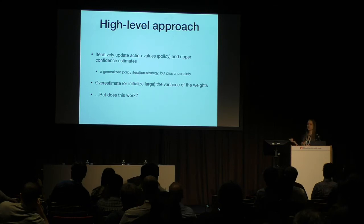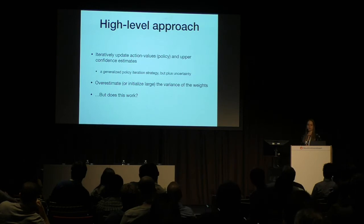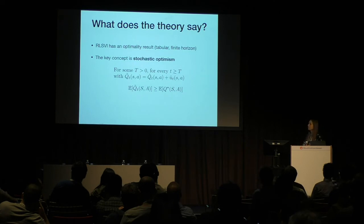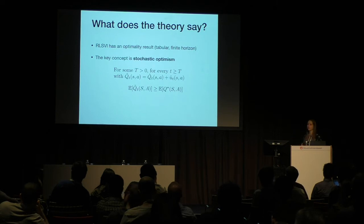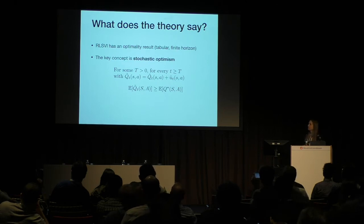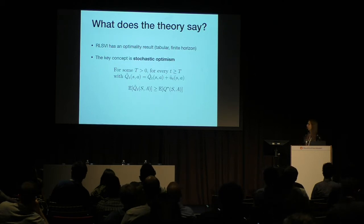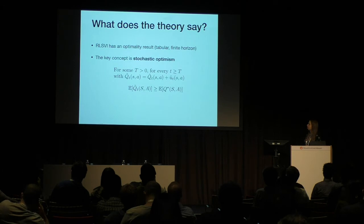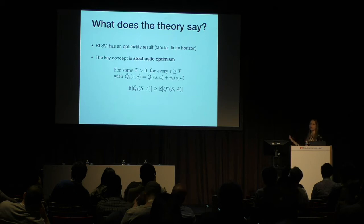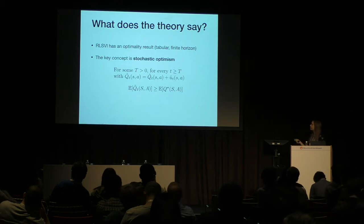Does this work in theory and practice? There isn't a lot of theory about using these bounds in RL. But there's nice theory from Ian and Van Roy on randomized least-squares value iteration (RLSVI), showing this type of strategy converges to optimal in the tabular case with finite horizon. The key concept they use is stochastic optimism — after some number of steps T, our upper confidence bounds Q-tilde, which equals our current estimate Q plus a radius term, should in expectation be larger than the true Q values.